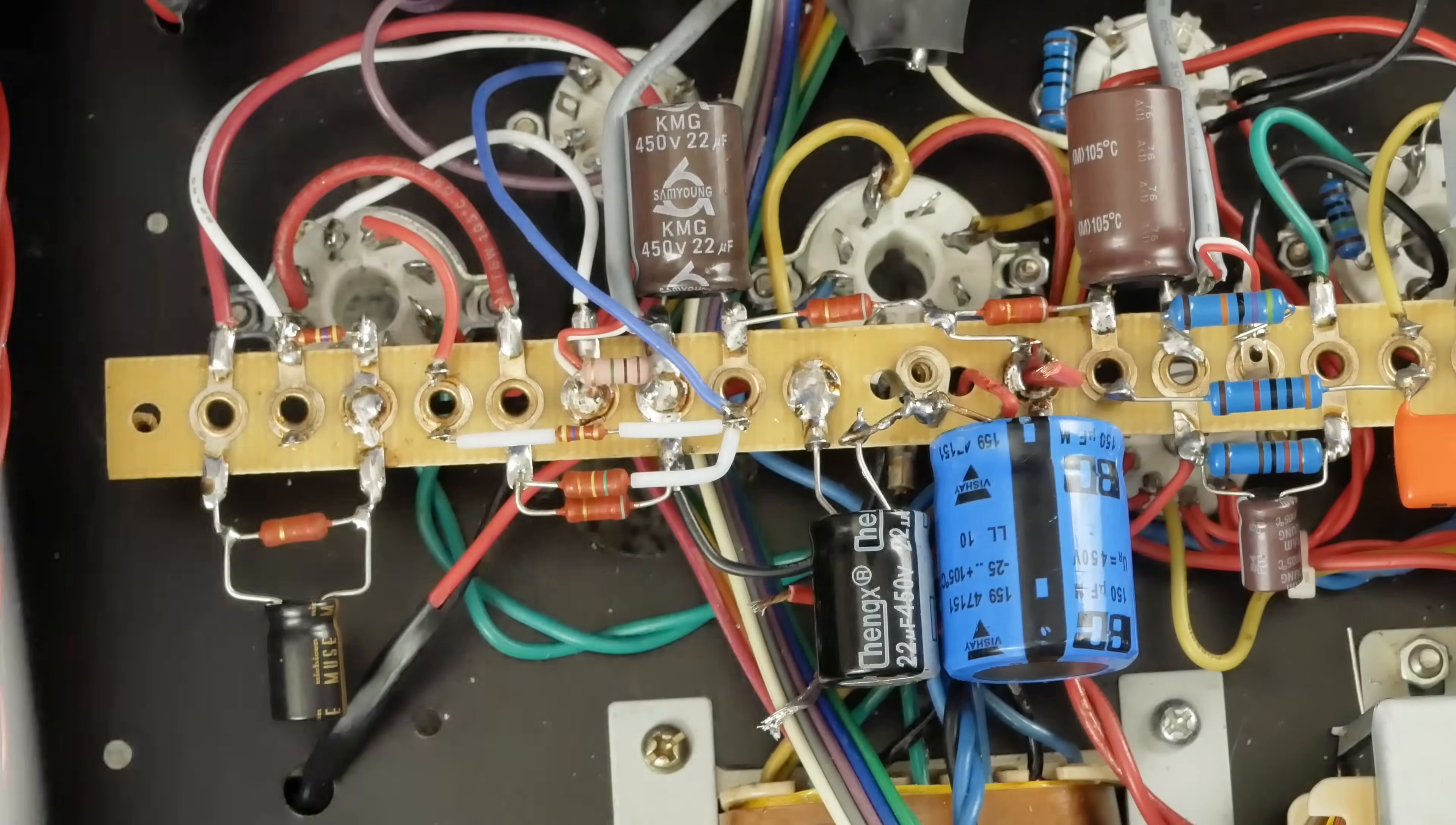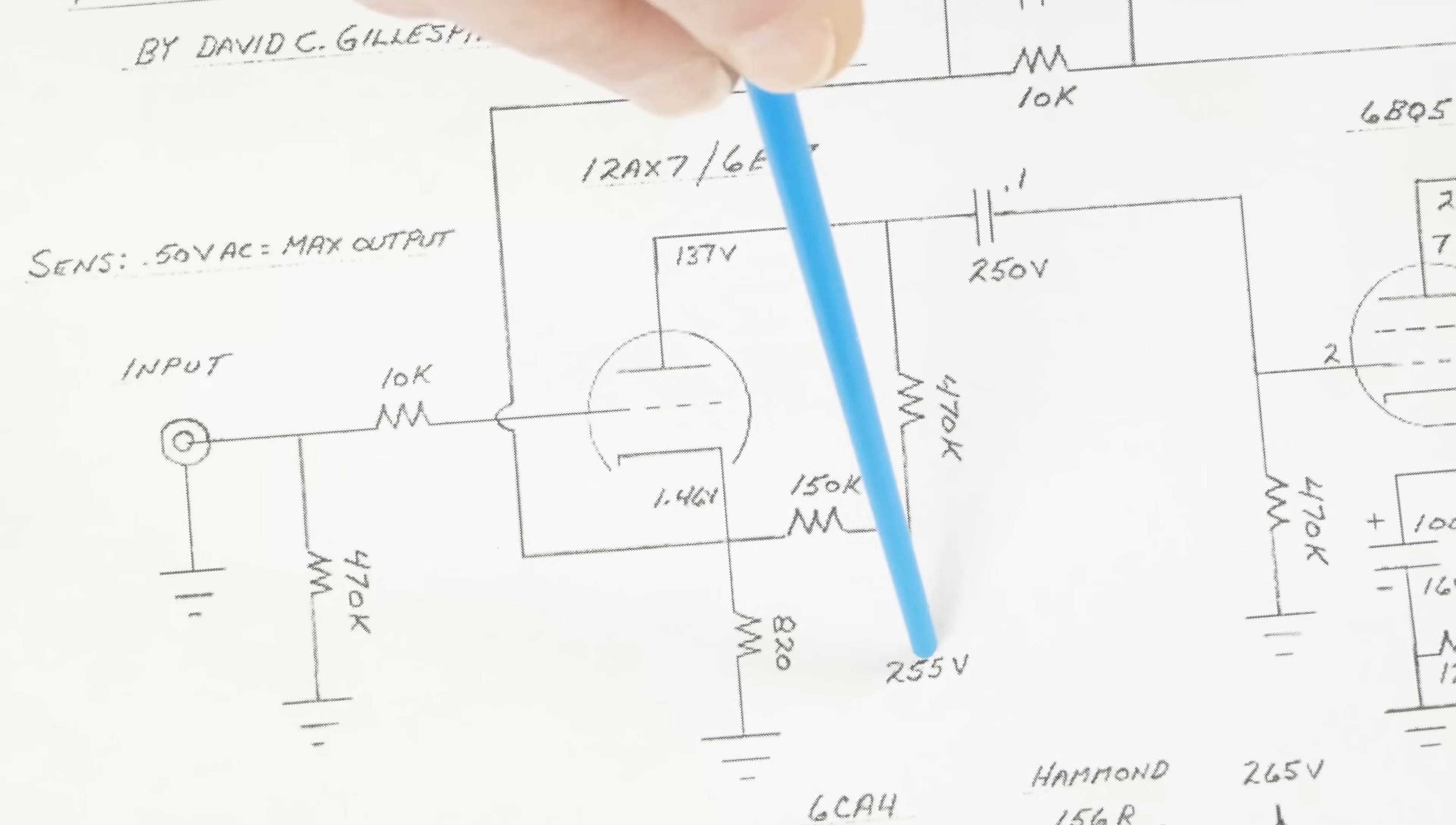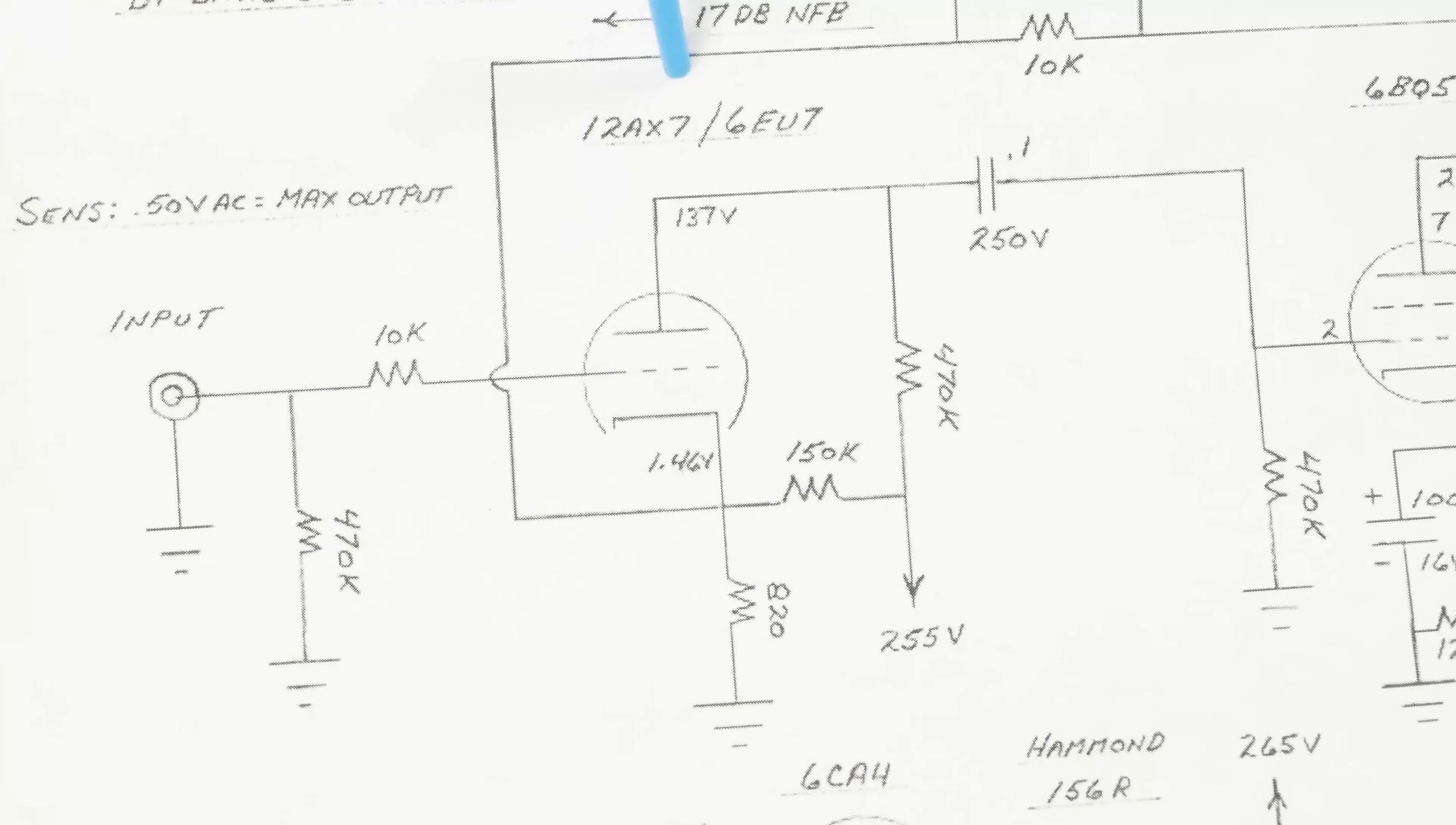Now we're going to move forward into doing the plate resistors and that part of the circuit. On the plate side, we've got this 255 volts here that we need to create. One side of it goes up here to the plate load on the 12AX7.